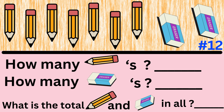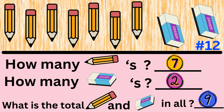Word problem number twelve. The word problem asks how many pencils are there, how many erasers are there, and what is the total of pencils and erasers in all? The answer is there are seven pencils plus two erasers, so there are nine pencils and erasers in all.